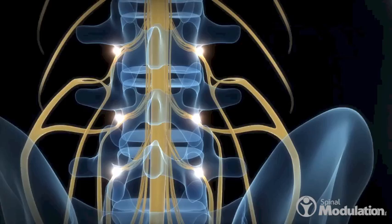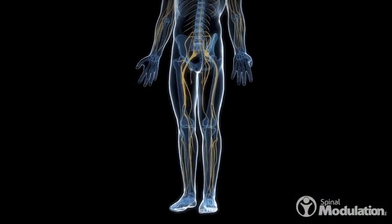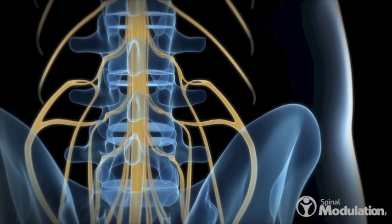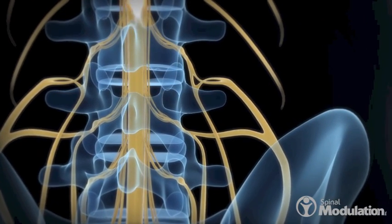The ganglia are organized around spinal nerves that map to sensory dermatomes. This feature allows therapy to be targeted to specific pain areas in the body. At the same time, overlapping innervation patterns also enable broad coverage.